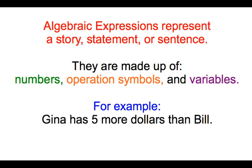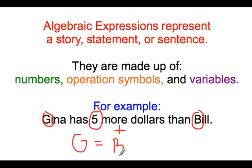Here is an example of how we would put together an algebraic expression. Gina has five more dollars than Bill. Five is going to be our number. More is going to stand for the operation symbol addition. And our variables are G for Gina and B for Bill. So we are going to say Gina equals Bill plus five.